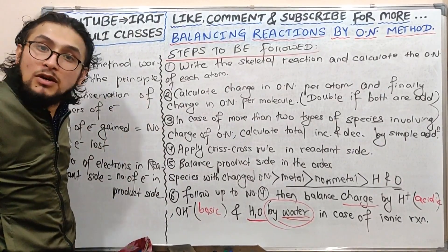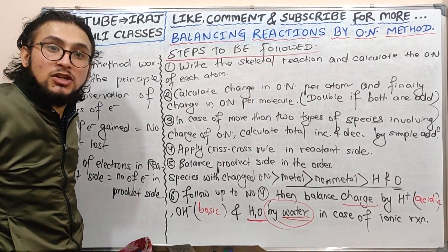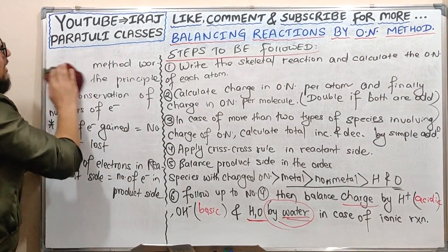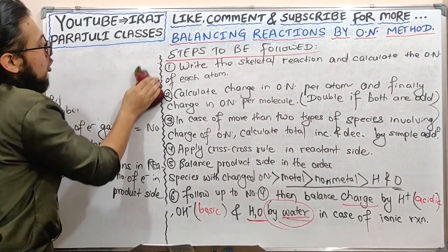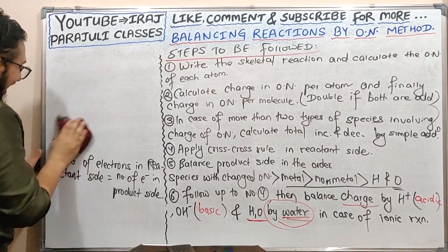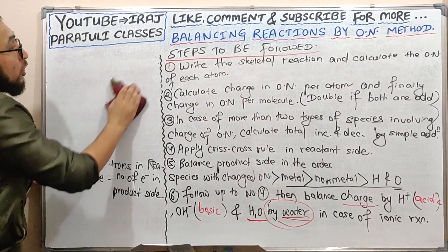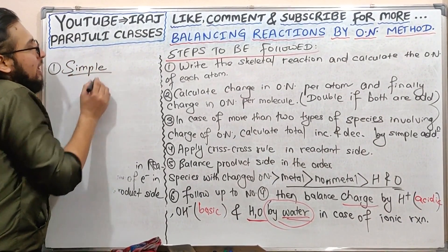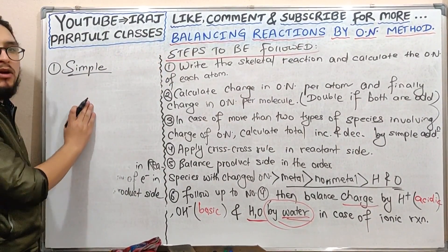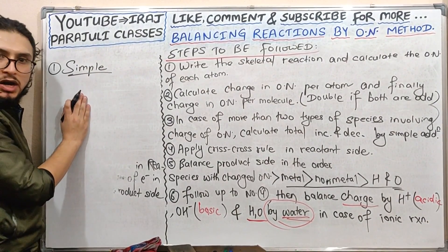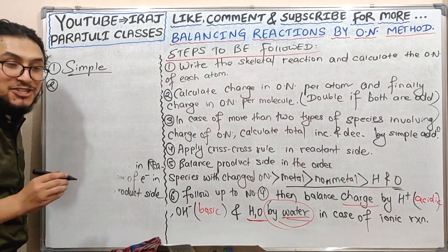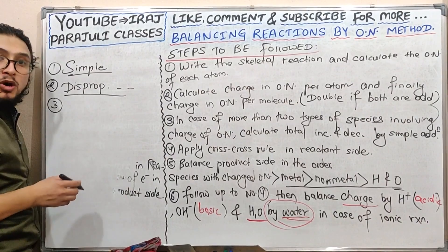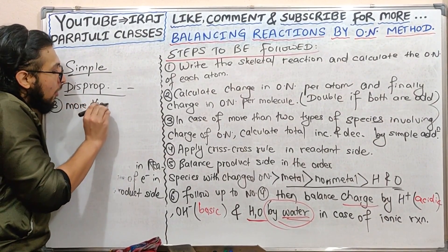In this lecture, we will do the introduction part. I will do the reaction in about 2 minutes. It's a simple reaction — simple meaning the oxidation number is changing. We will see disproportionation reaction, which is a second type. We will also see more than two species.